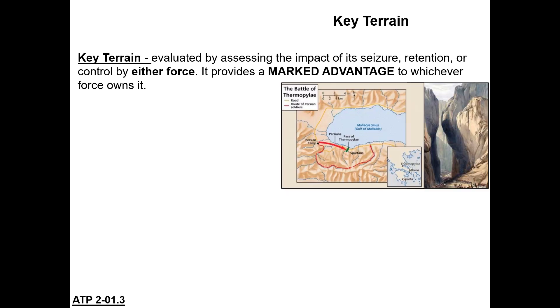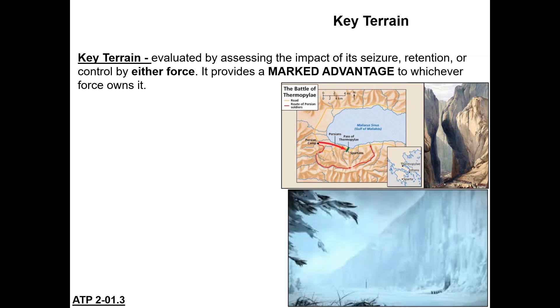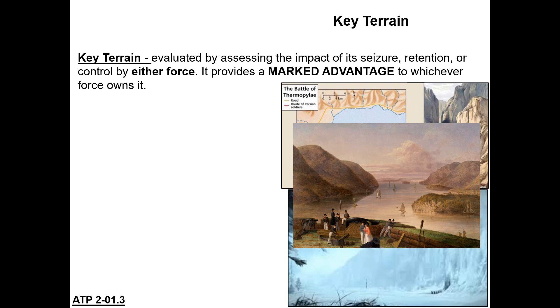Key terrain must be evaluated by assessing the impact of its seizure or retention on both forces. At the Battle of Thermopylae, whichever force controlled the gates could control movement and prevent others from coming through or guarantee their own passage. From fiction, we could talk about the Wall in Game of Thrones — the ability to control that wall controlled who could move across it. Another example: a narrow part of a river where boats had to slow down, meaning whoever controlled the high ground on either side could put gunfire and shut down traffic going from New York to Albany. That made it key terrain.